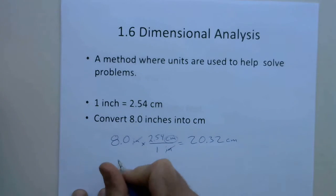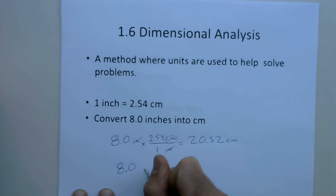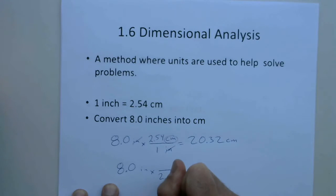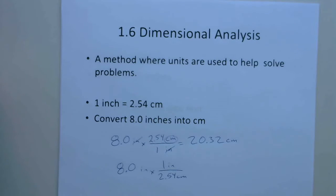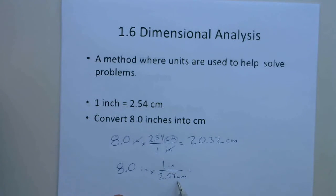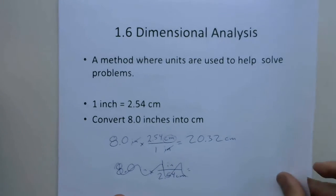The reason it's important to set up a question like this is: if I did it incorrectly — say I put 2.54 centimeters and 1 inch on the top — I can see pretty easily that inches don't cancel out with inches, and the units are not going to make sense at the end. So I know that setup is not correct. By showing this work, you're going to get the right answer pretty much every time.